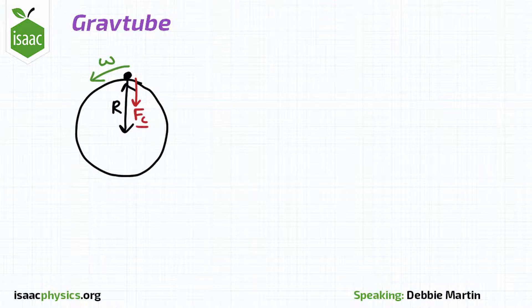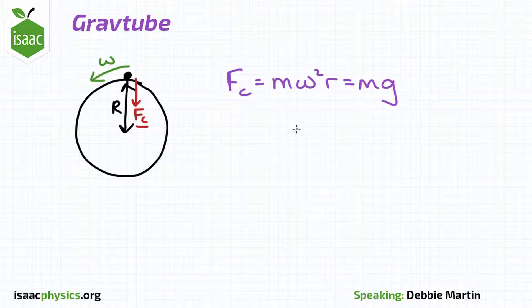By Newton's second law, fc equals m omega squared r, which is also equal to mg, where g is the gravitational field at the surface.